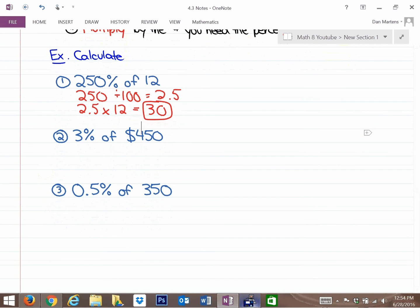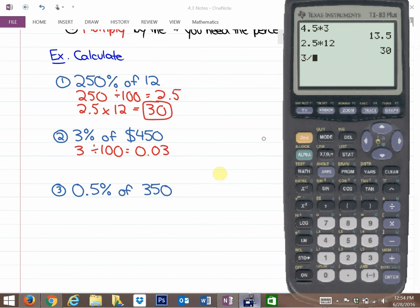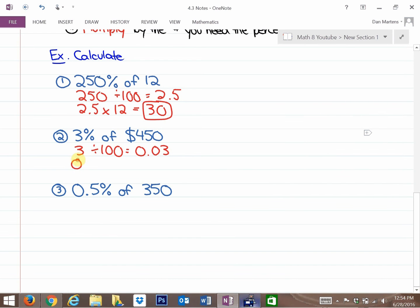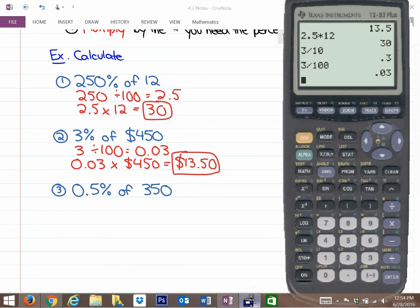Same thing here, 3% of 450. We should anticipate that we're going to get $13.50. We can make the percent into a decimal. So 3 divided by 100, you could do that on your calculator, is 0.03. And if you times that by $450, you'd get 3% of $450. And that is $13.50. And once again, I could show you that on my calculator.